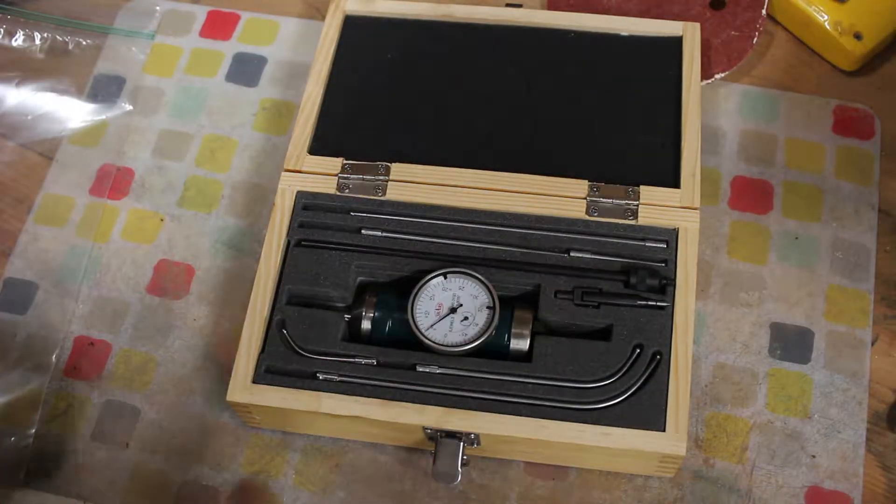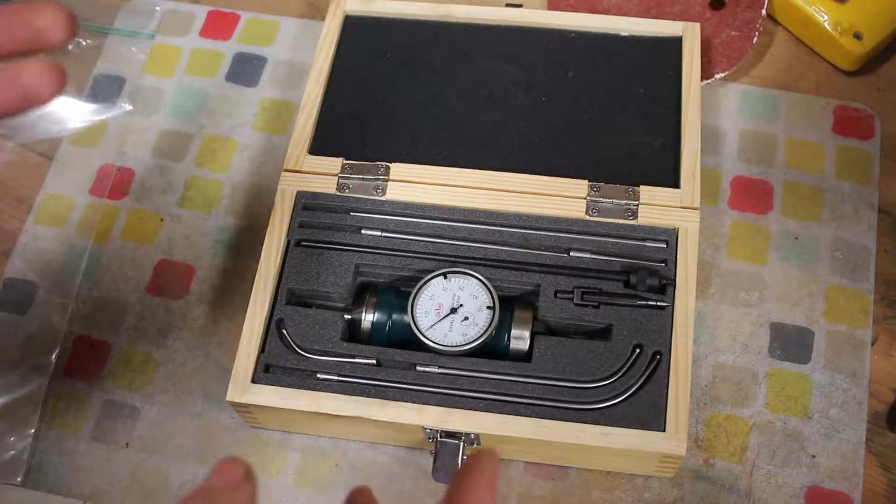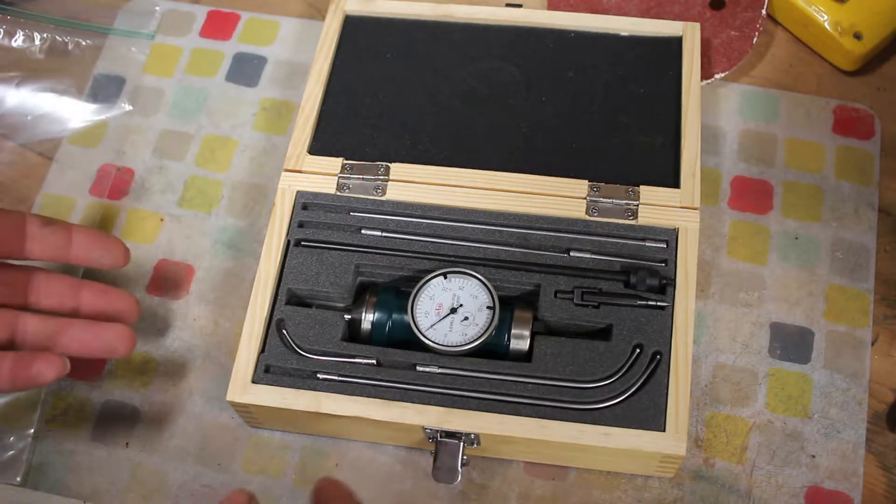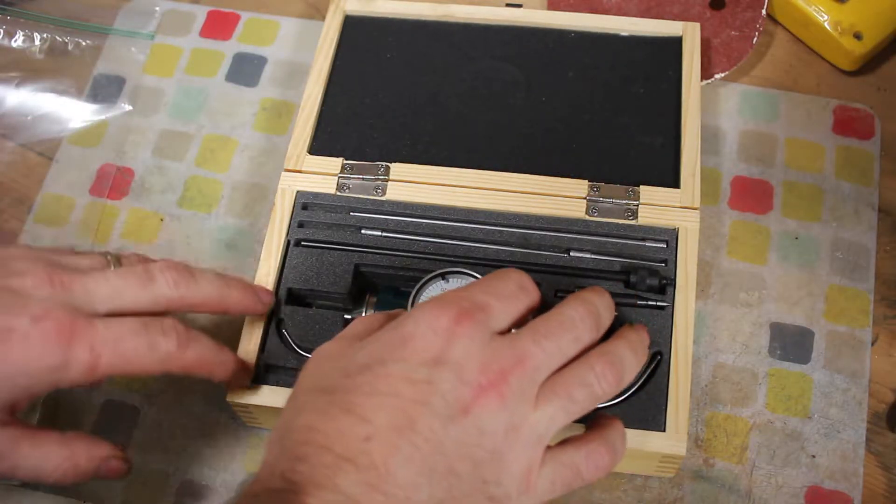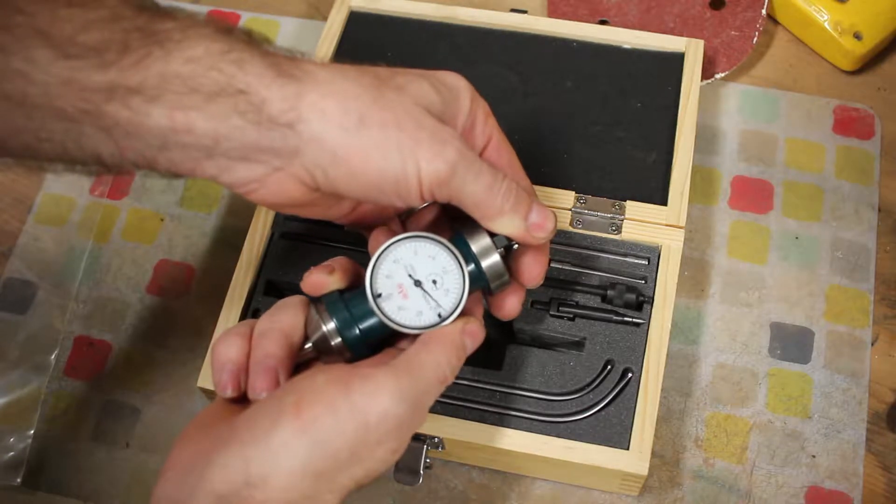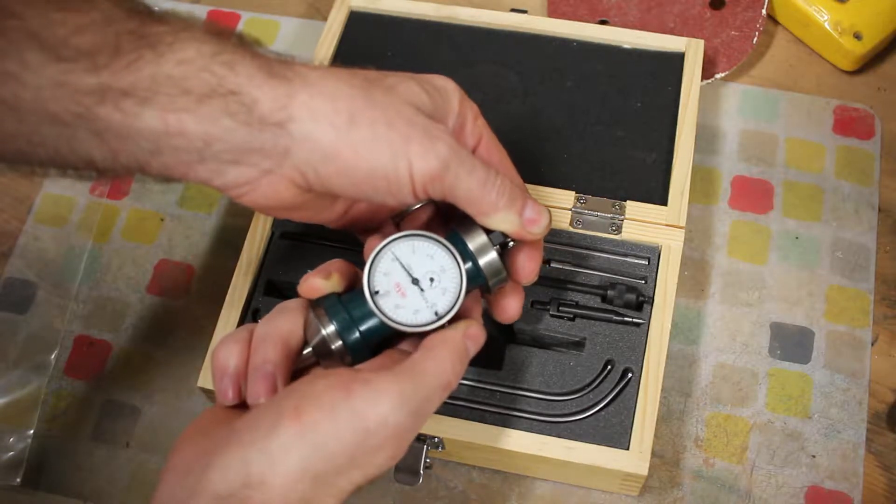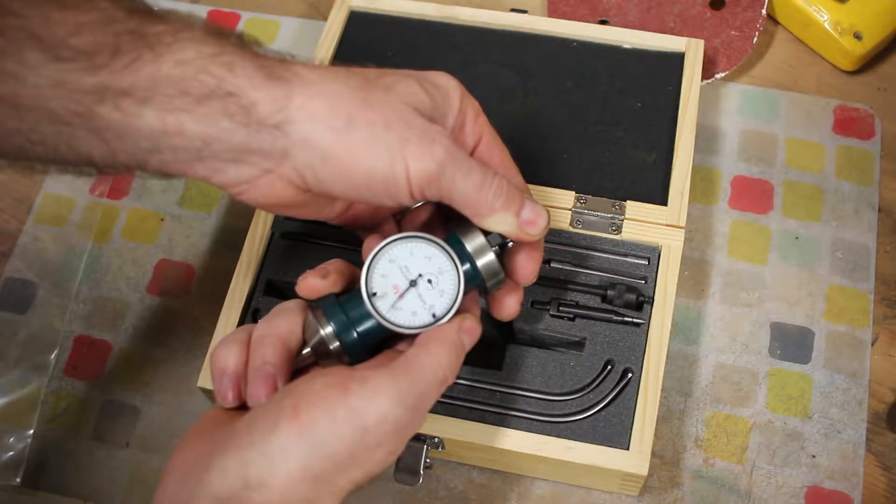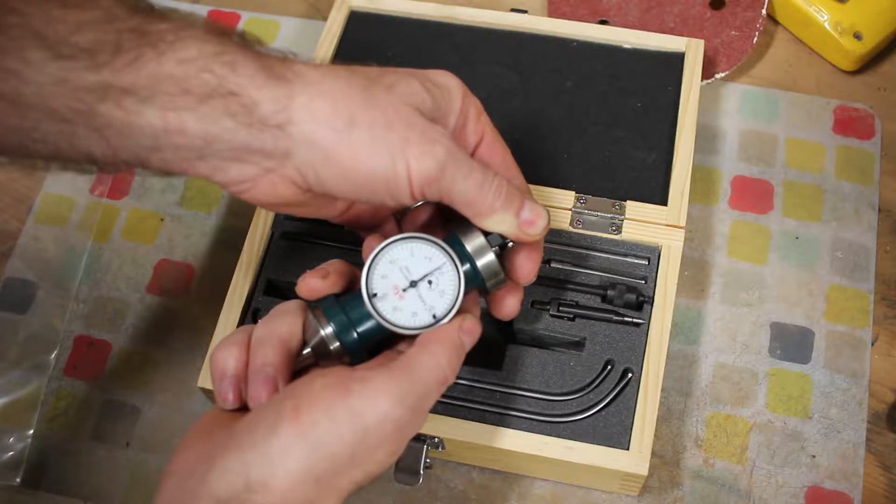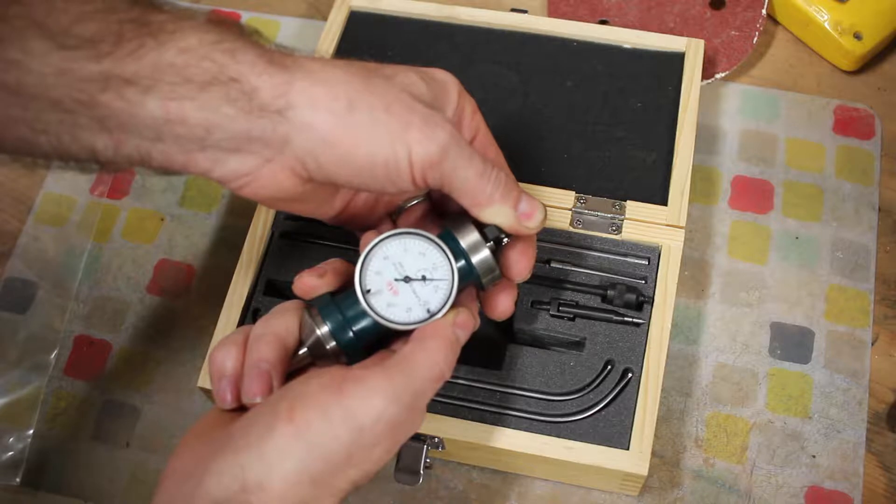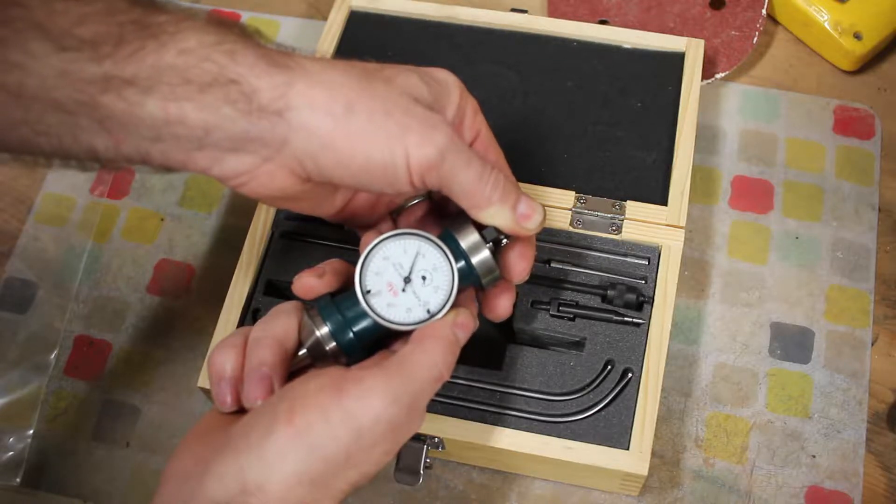A while ago I bought this coax indicator from Shars, and as you can see it has not been used all that much and it has started skipping. I don't know if I can get it to do it now. Yeah, see the dial pause there. It's moving. It skips. So there's something broken inside here, something slipping inside.